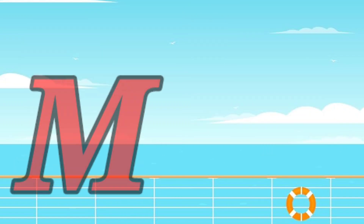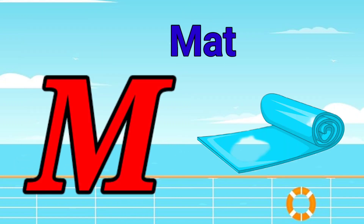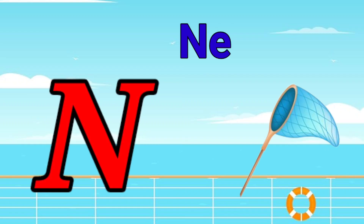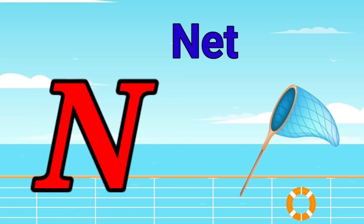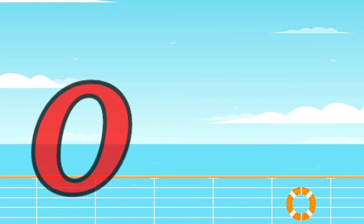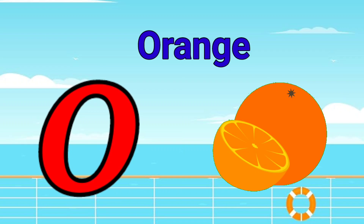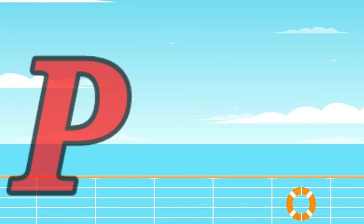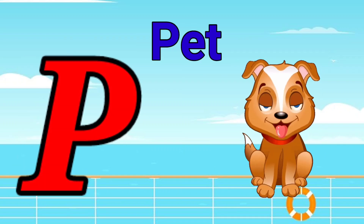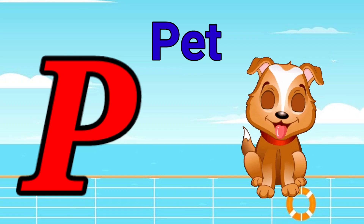M is for mat, m-m-mat. N is for net, n-n-net. O is for orange, o-o-orange. P is for pet, p-p-pet.